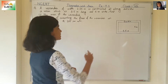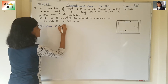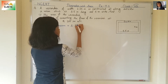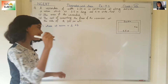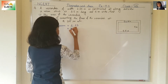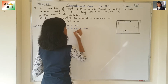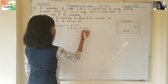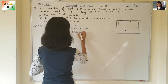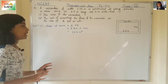So first let's find out the area of the room. The room is a rectangle, so the formula for area of a rectangle is length into breadth, L × B. So length is 5.5 meters and breadth is 4 meters. That gives us 22 meter square. So this is the area of the room.